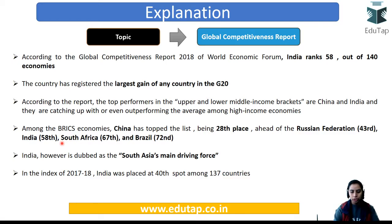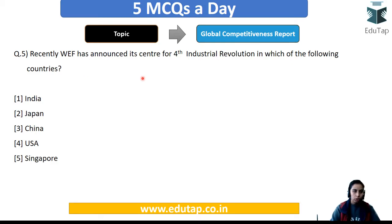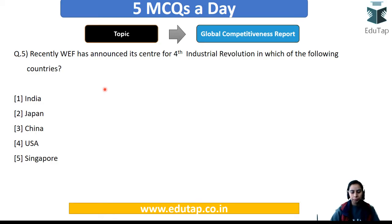India is identified as the main driving force of South Asia's economy. Question number 5: World Economic Forum has announced its center for the 4th Industrial Revolution in which country? This is not directly from the report but is very important given the report's focus on the 4th Industrial Revolution. The options are India, Japan, China, USA, or Singapore. The correct answer is India.